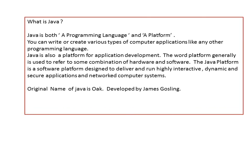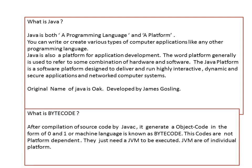What is Java? Java is a programming language and a platform — both. When you create any kind of program using Java, it can be executed on a different platform. Platform means a combination of hardware and software. The Java platform is a software platform designed to deliver and run highly interactive, dynamic and secure applications on network computer systems. It was originally developed by James Gosling. After compilation of source code by javac, it generates an object code in the form of 0s and 1s, or machine language, known as bytecode. This code is not platform dependent — it just needs a JVM to be executed.